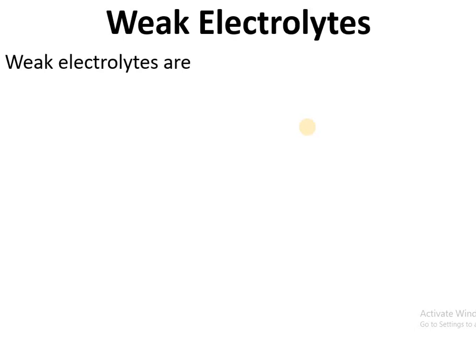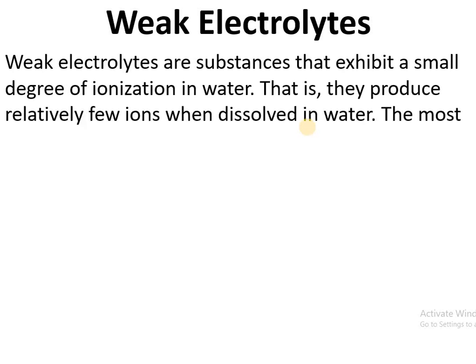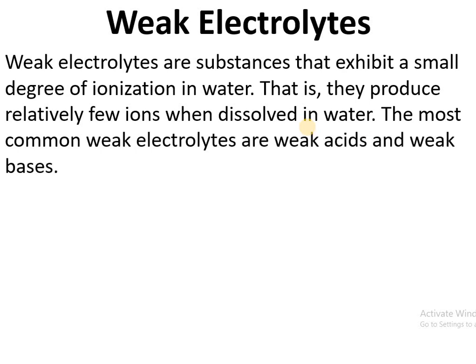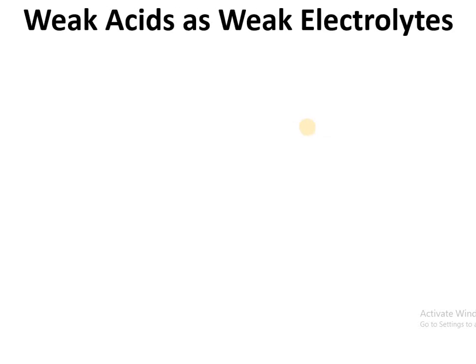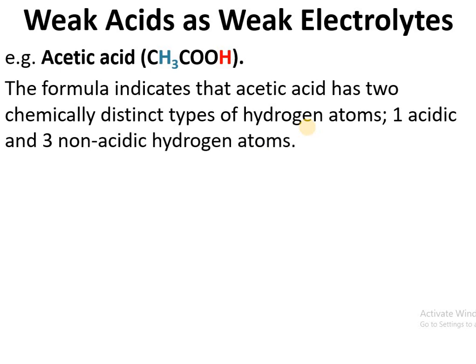Weak electrolytes are substances that exhibit a small degree of ionization in water; that is, they produce relatively few ions when dissolved in water compared to strong electrolytes. The most common weak electrolytes are weak acids and weak bases. For example, acetic acid, CH₃COOH — the formula indicates that acetic acid has two chemically distinct types of hydrogen atoms.